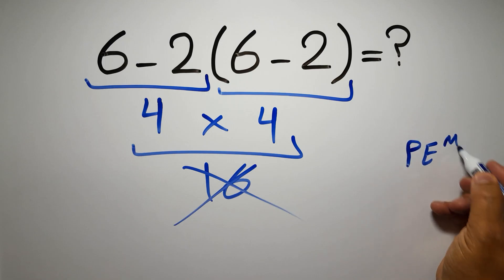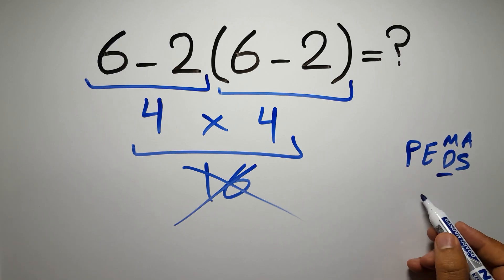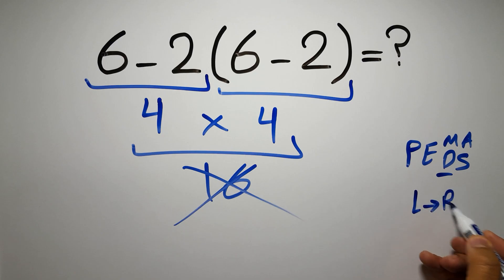Then exponents, then multiplication or division, and finally addition or subtraction. Remember that multiplication and division have equal priority and we have to work from left to right, and the same applies to addition and subtraction.